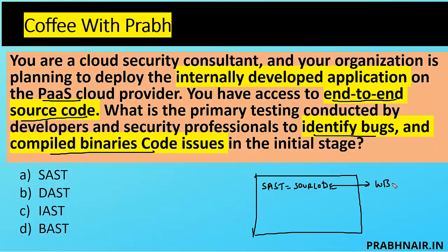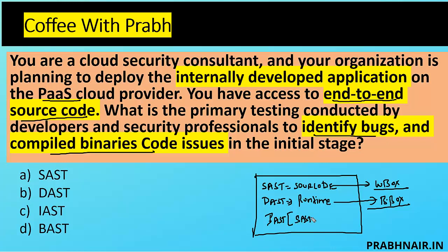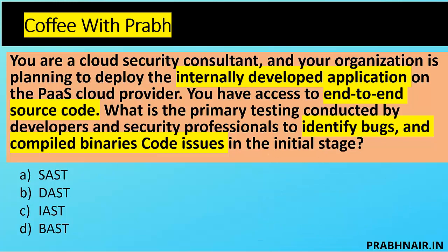Here is the hierarchy: when SAST is involved, you have access to the source code and perform white box testing. In DAST, you test the application at runtime — mostly black box testing. For SaaS solutions, IAST is the combination of SAST and DAST where you can run the application in a running state and identify bugs. However, this question specifically talks about an internally developed application in the initial coding stage, so IAST and DAST are removed. The answer is SAST — reviewing the code without executing the application and identifying bugs.